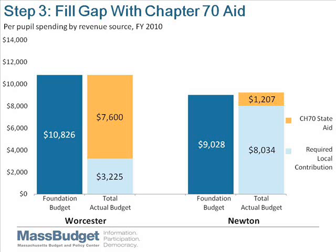Step 3: fill the gap with Chapter 70 State Education Aid. Chapter 70 Education Aid is determined by filling the gap between the foundation budget amount and the required local contribution. It is done this way to ensure that total funding is at least as high as the foundation budget amount. In this case, Worcester receives more than six times as much Chapter 70 Education Aid as does Newton for two reasons: first, because its foundation budget is higher than Newton's, and second, because its ability to contribute local revenue is lower.